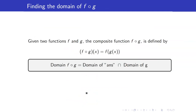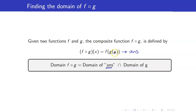Now what we want to do is find the domain of f circle g. To get the domain of f circle g, you have to get the function f circle g of x and find its domain. But you also have to get the intersection of this with the domain of g, because in the first place you have to put x inside the function g, so x should be in the domain of g.